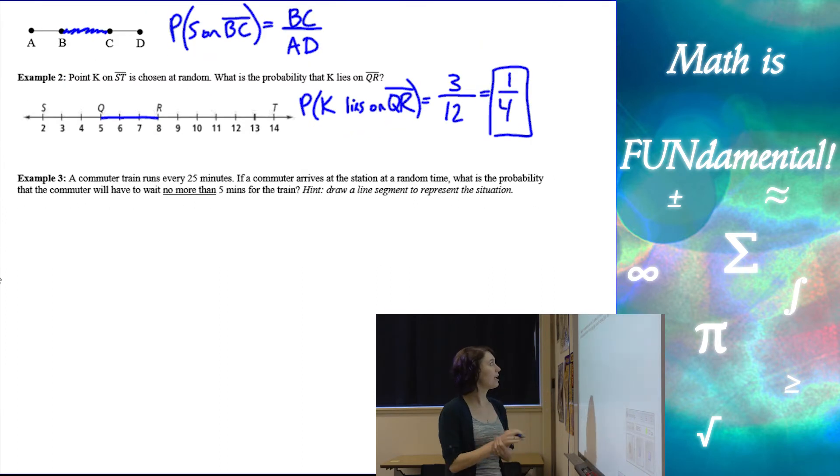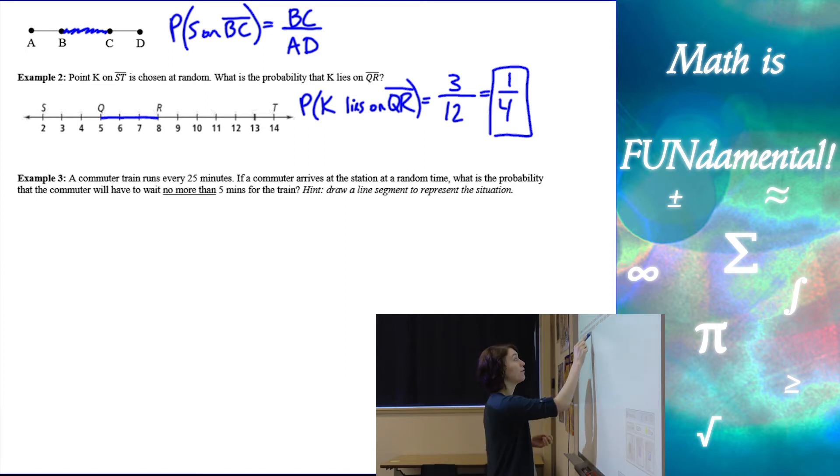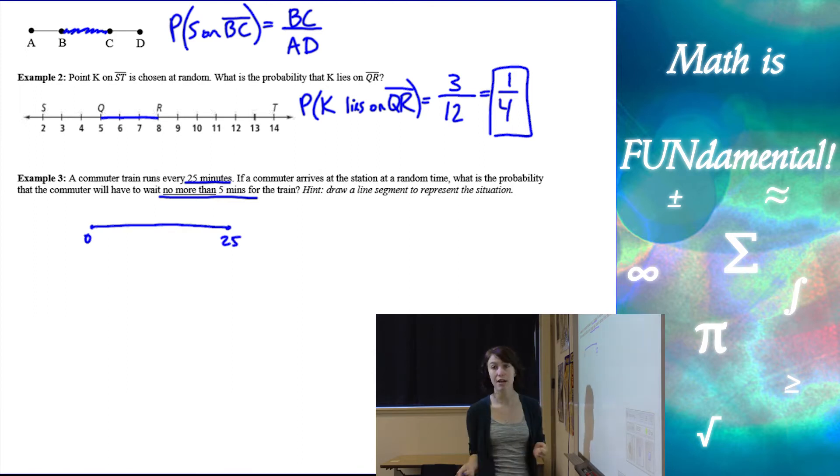Alright, example 3. A commuter train runs every 25 minutes. If a commuter arrives at the station at a random time, what is the probability that the commuter will have to wait no more than 5 minutes? So we have 25 minutes total. We don't want to wait for any more than 5 minutes. So if we draw a picture of what's going on.